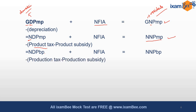When production tax is subtracted from this aggregate and production subsidy is added, we arrive at net domestic product at factor cost. Production taxes are land revenues, stamps, registration fees, and tax on profession. Production subsidies could be subsidy to railways or input subsidy to farmers. When these are accounted for in the net domestic product at basic price, we arrive at net domestic product at factor cost. When NFIA is added to this, we arrive at net national product at factor cost.